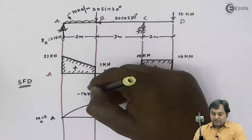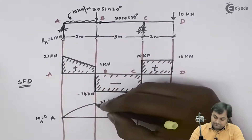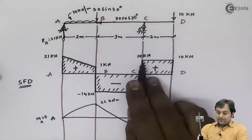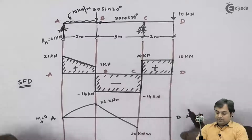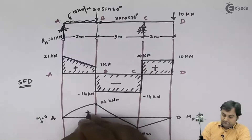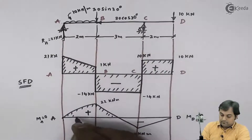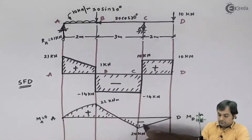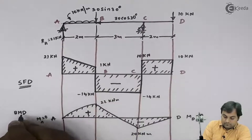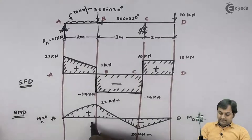Between B to C we have a constant load, shear force was constant, so bending moment will be an inclined line. Between C to D shear force is a constant straight line, so bending moment should also be an inclined line. Here I have plotted the bending moment diagram with values noted at all points A, B, C, and D.